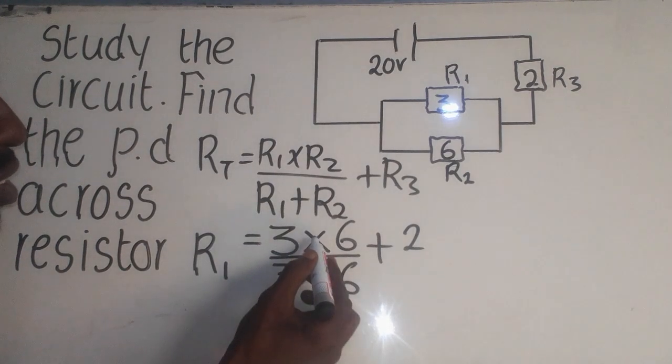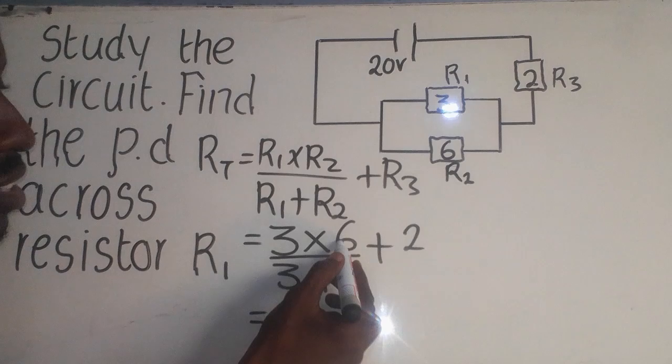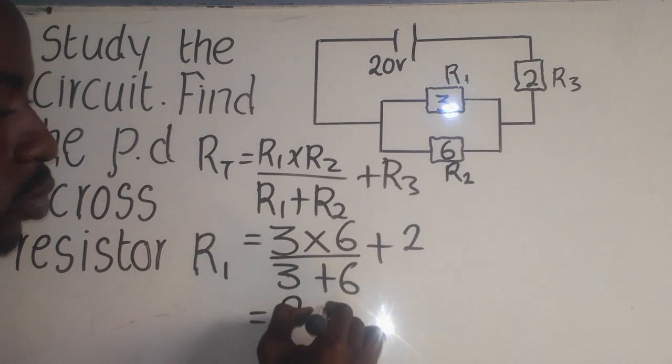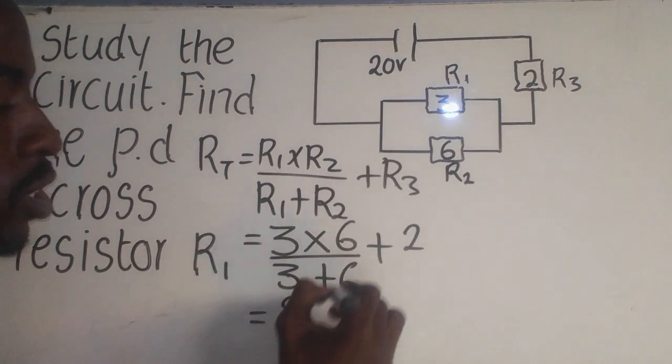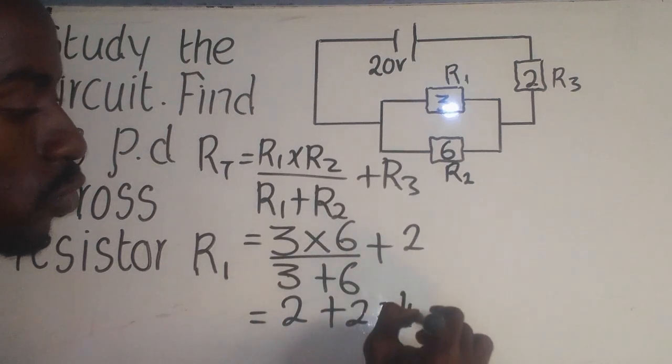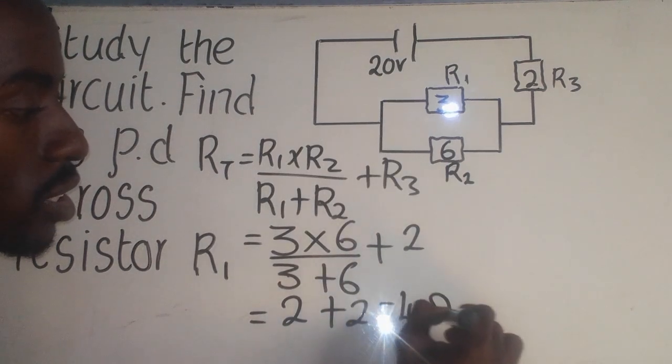So, 3 times 6, it is 18. 3 plus 6, it is 9. So, 9 into 18, it is 2. So, it will be now 2 from here, plus 2, which will give me 4, 4 ohms like that.